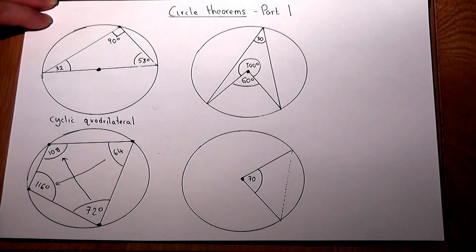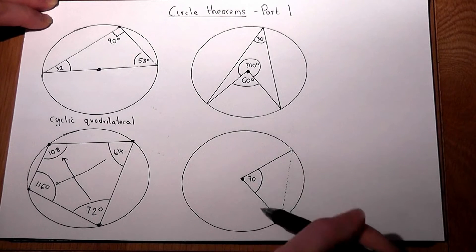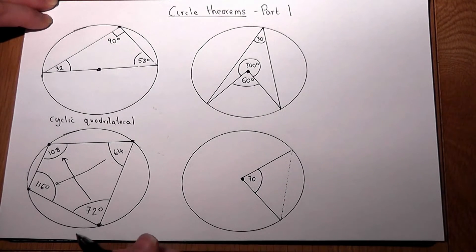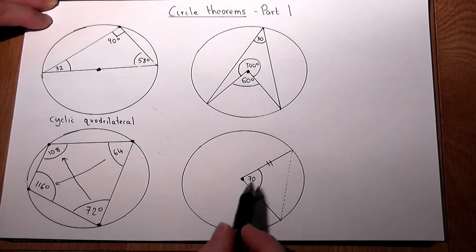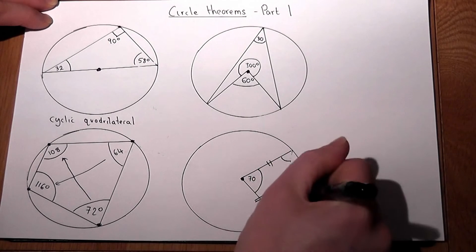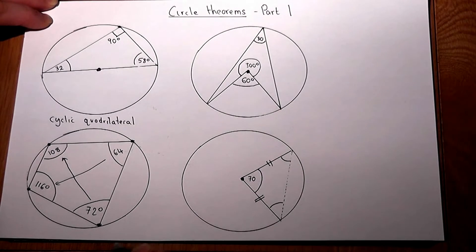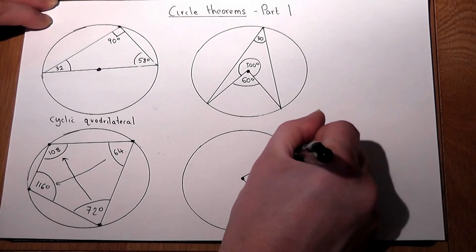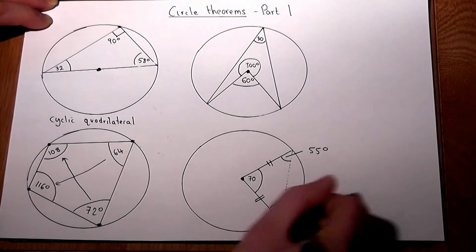The final theorem on this page — one which is obvious but often missed — is that because these two lengths are both radii of the circle, they must be the same length. If they're the same length, this is an isosceles triangle, so these two angles are the same. To work those out: 180 take away 70 is 110, then halve it — these two angles must both be 55 degrees.